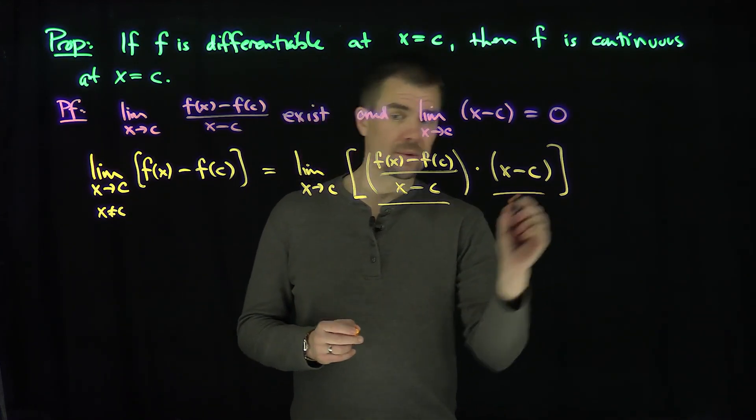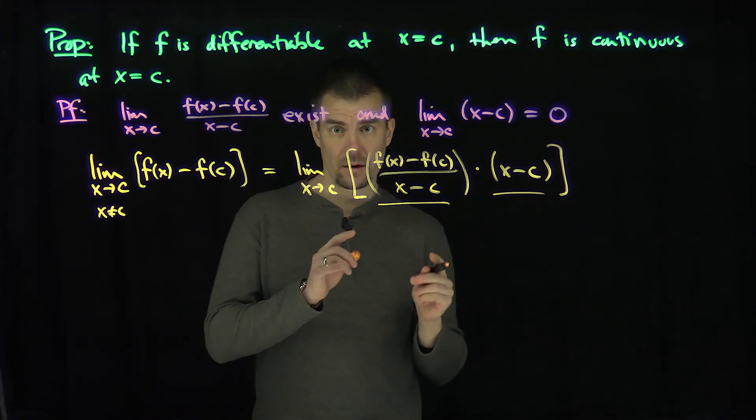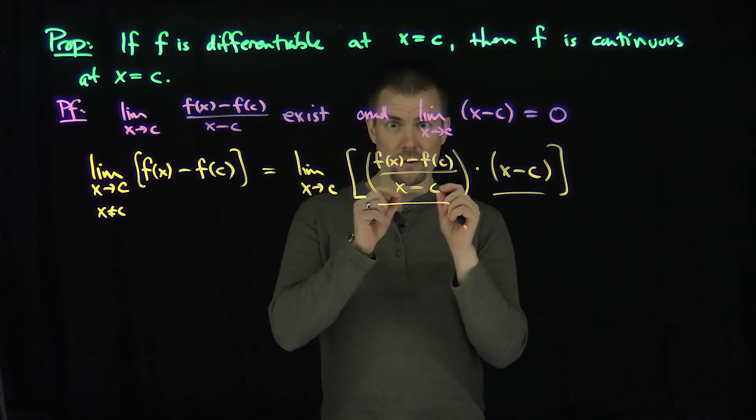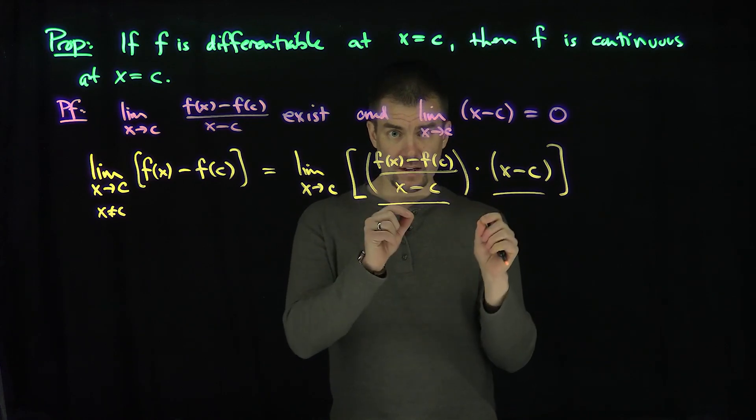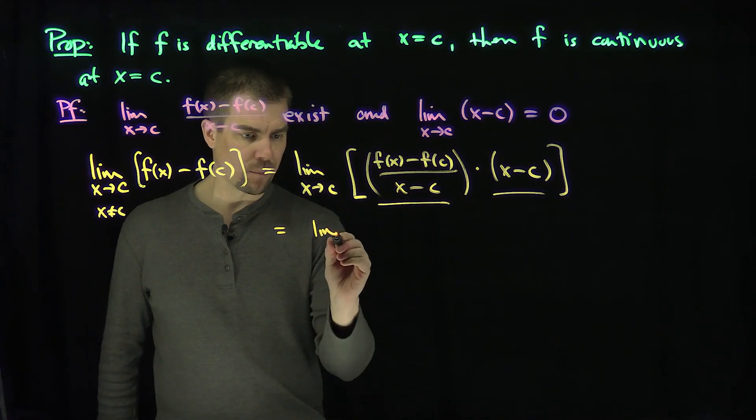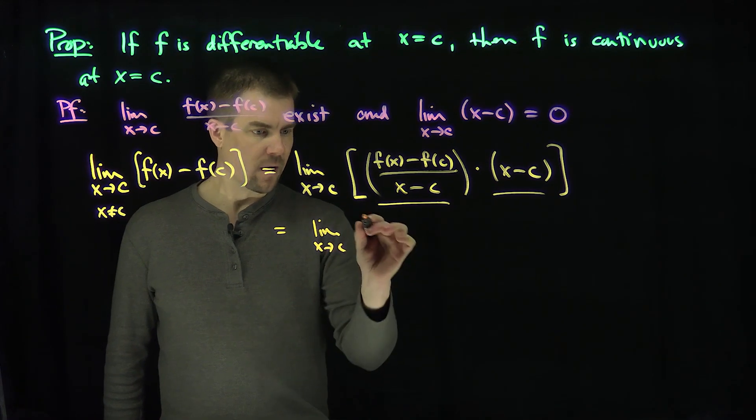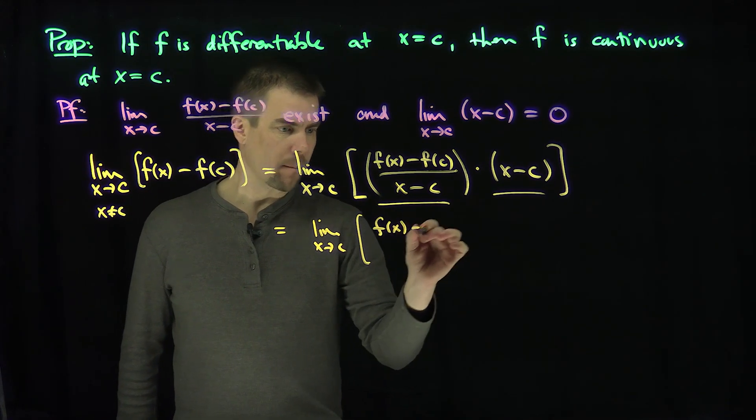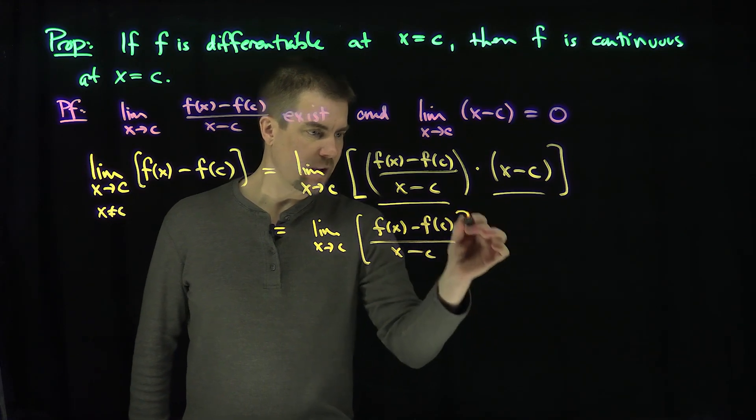Now, as we mentioned, both these limits exist. By properties, by the limit theorems, we know that if you have a limit of two things that are multiplied that exist, you can split that limit into the product of the limits. So this is the limit of the product, the limit as x goes to c of f(x) minus f(c) over x minus c.